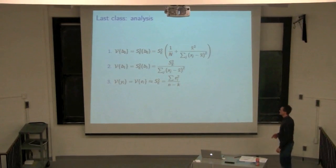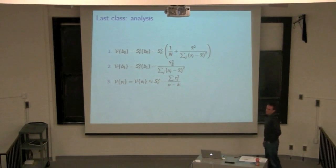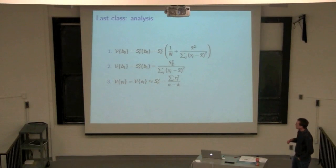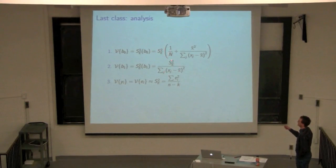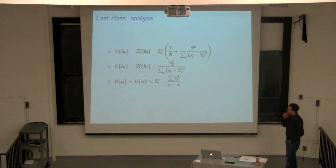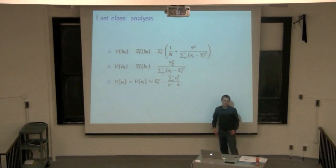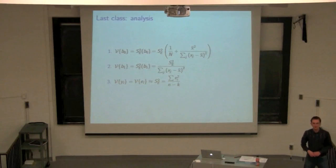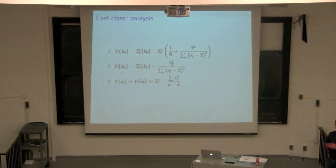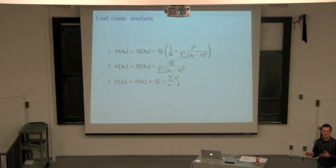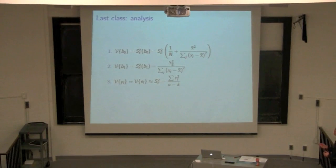The variance of the errors — the standard error — is used to calculate the variability of the two coefficients B0 and B1. Usually we're only interested in the variance of the slope. The intercept is not often of great interest because it's often far away from where we're building the data. For example, if our x's range between 100 and 300, we're not interested in what the model means at x equals 0.